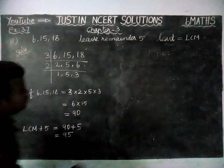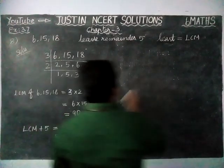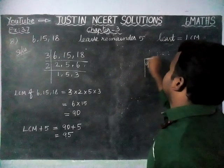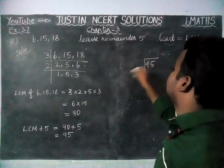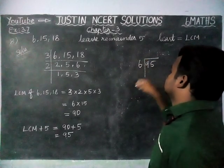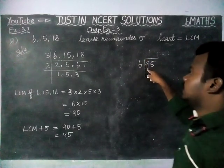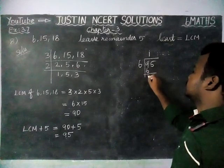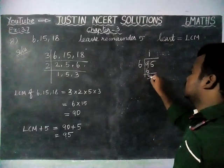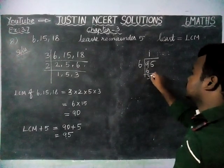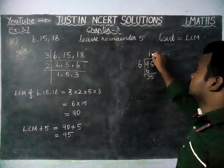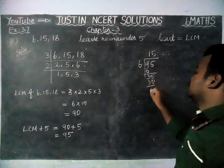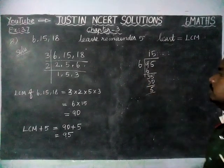We are going to check this value, 95. We will divide it by 6. In 9, we get 1, and 6 ones are 6 — remaining 3. In 30, we get 5; 5 sixes are 30 — remaining 5 is there.